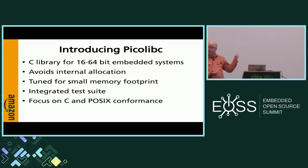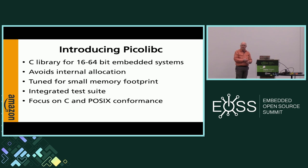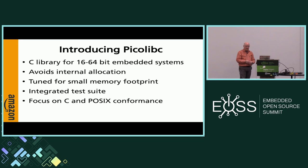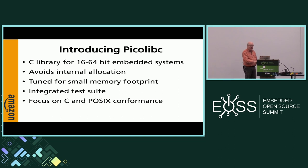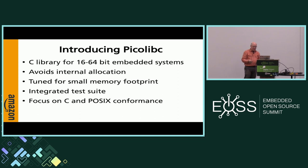I just got a bug yesterday where picolibc was returning the wrong value from fesetround when passed an invalid value, and that resulted in about six commits required to fix it across all architectures. I'm super interested in C and POSIX conformance at all levels — correct errno values, correct exception values from functions — because if you're almost implementing the standard, you might as well not bother. Users need to be able to count on the library to actually conform.